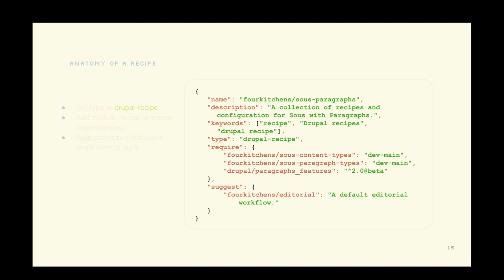The composer.json file is going to be pretty similar to people who are used to poking around modules or themes — most of the metadata is the same. The critical difference here is the type of 'drupal-recipe', which is something new, and then defining whatever your dependencies are — in this case, a couple of other recipes as well as a Drupal module.